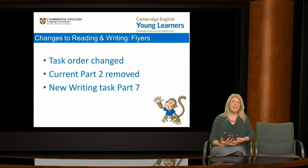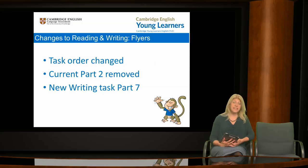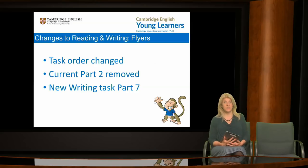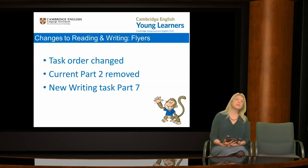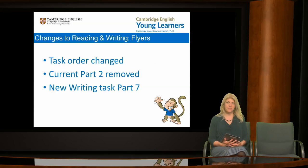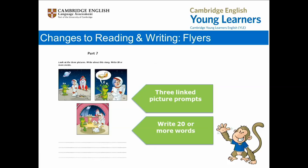Now let's look at flyers reading and writing. Again, the task order has been changed to bring easier tasks to the beginning of the test. The current Part 2 has been removed to make room for a new writing test, which is Part 7. Let's look at a sample of this task. Candidates write a short story based on three picture prompts, which are sequenced on the page to form a narrative. No other prompts are provided for the task.